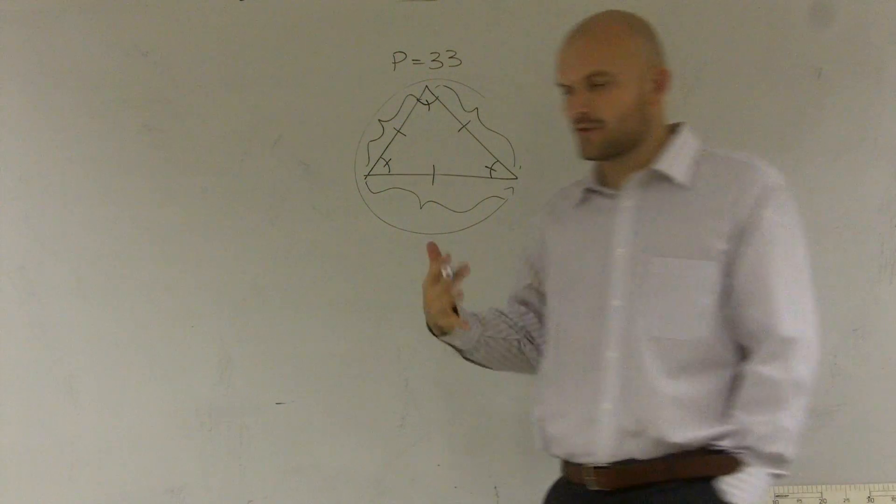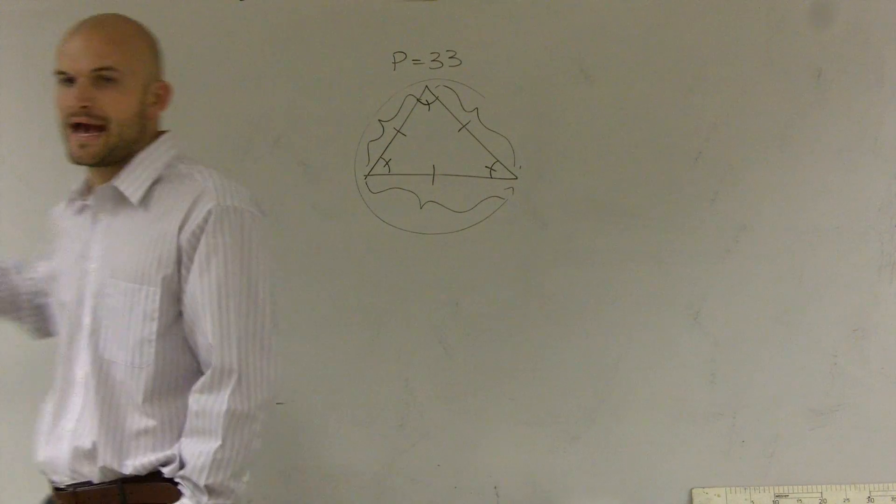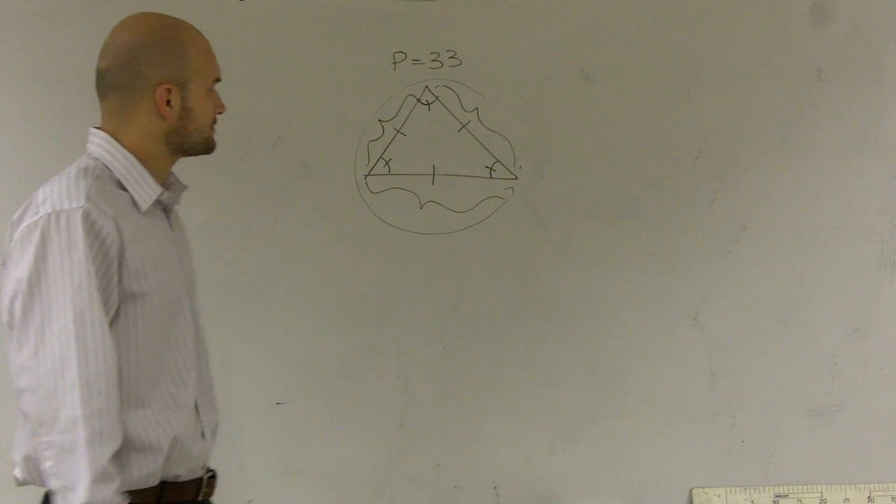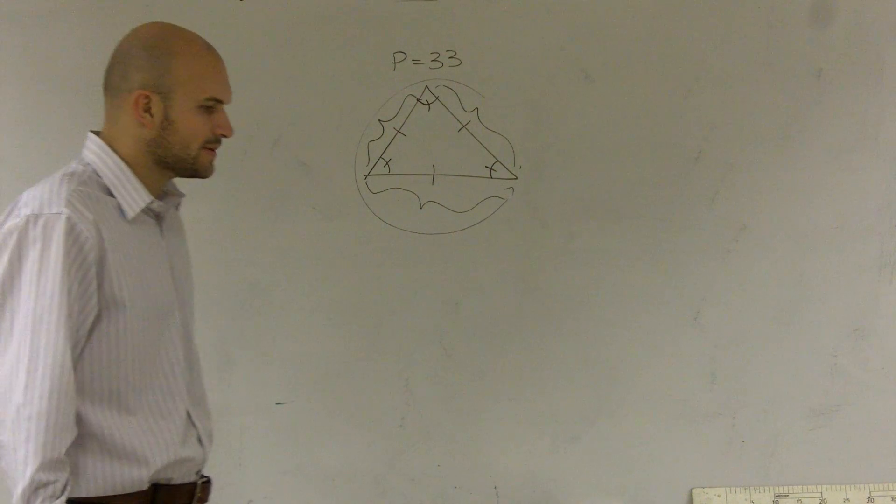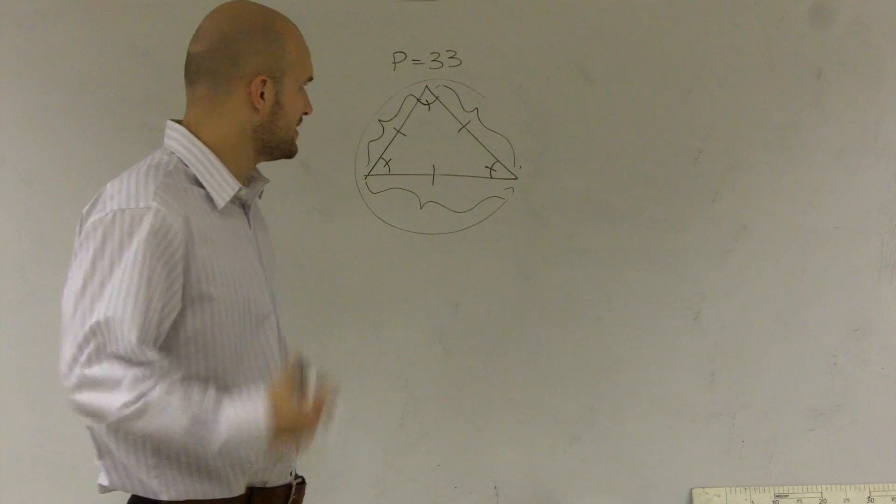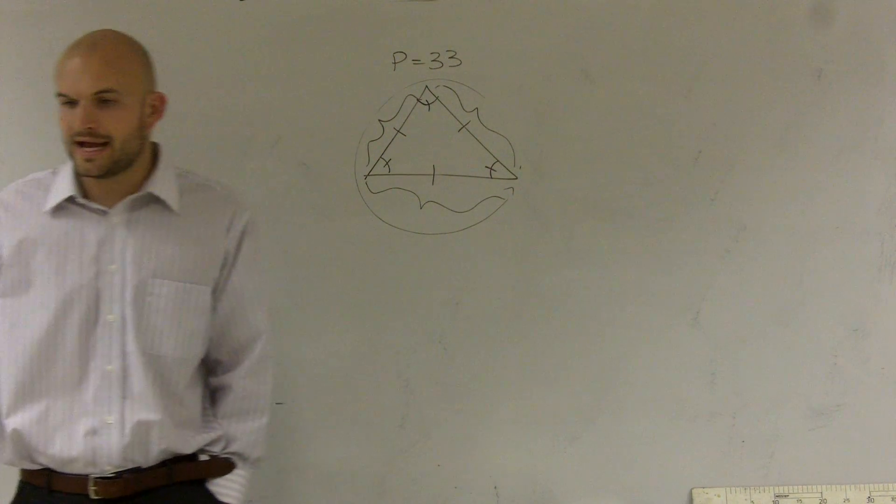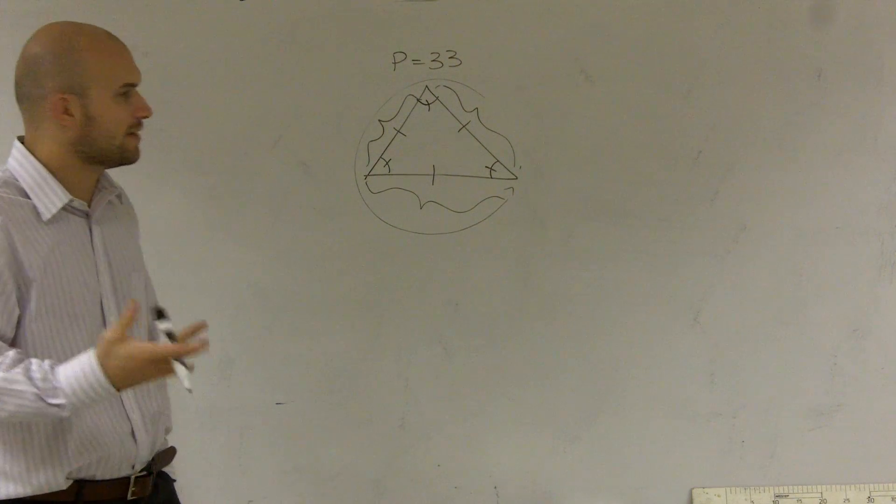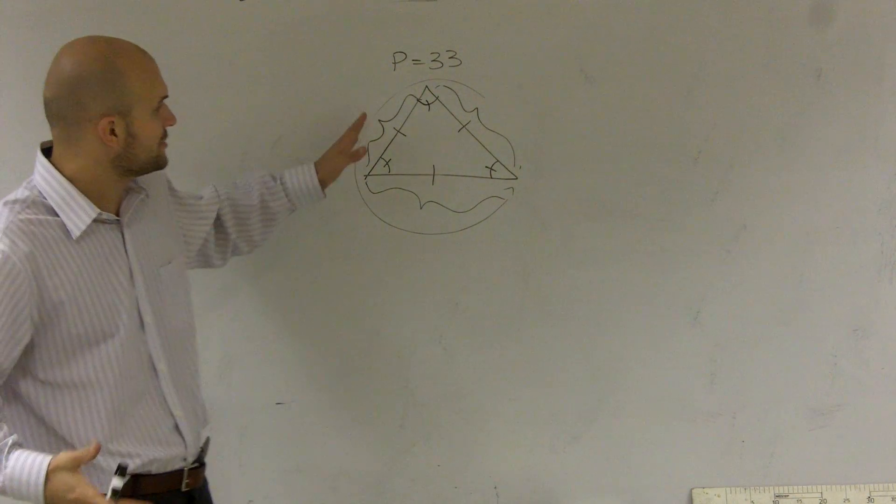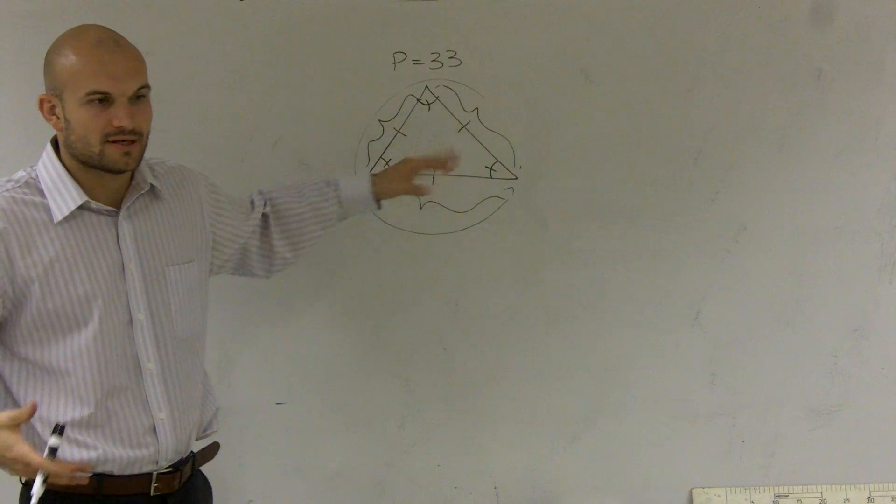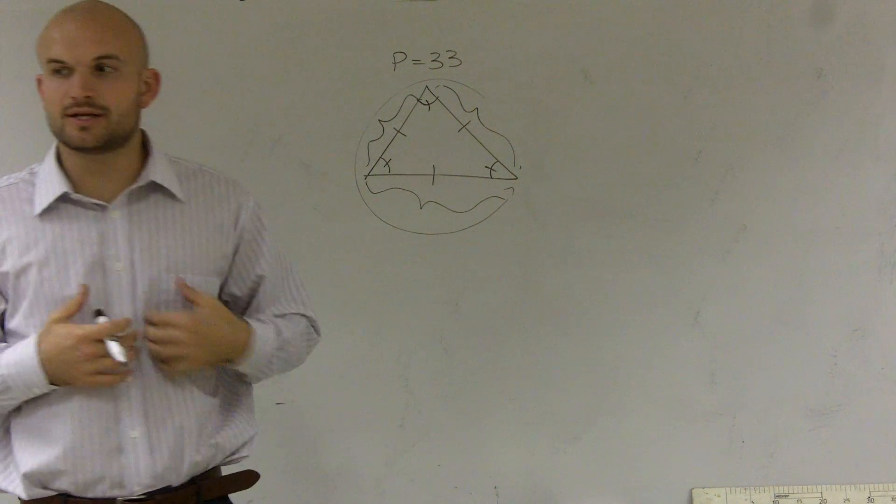So how are we going to determine what one side length equals if all of them add up to 33? What we can do is write an expression. First of all, what is it we don't know? We don't know the value of one of these sides. So when you don't know the value of something, in algebra what we do is we give it something.